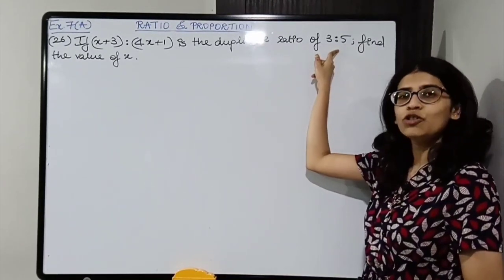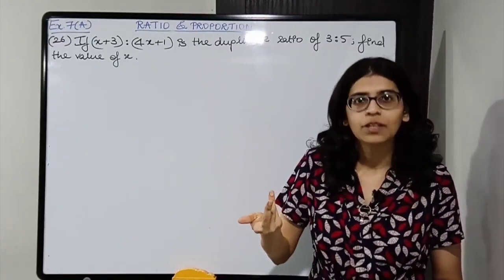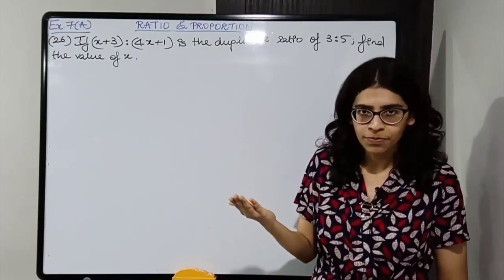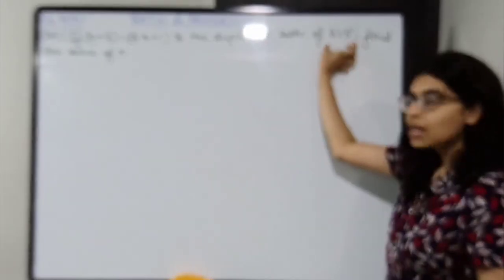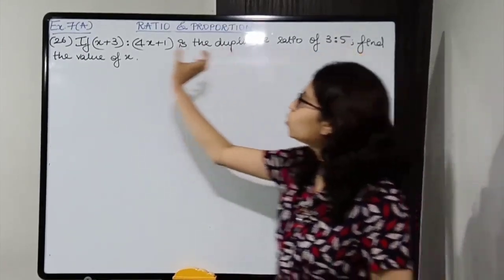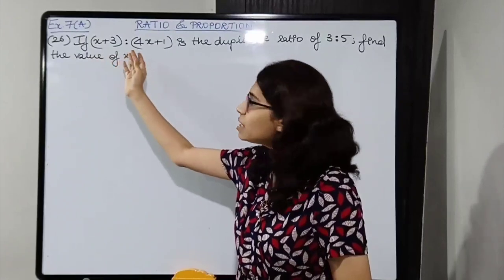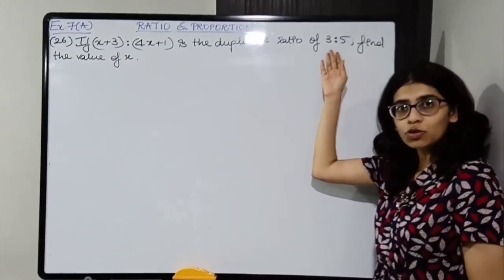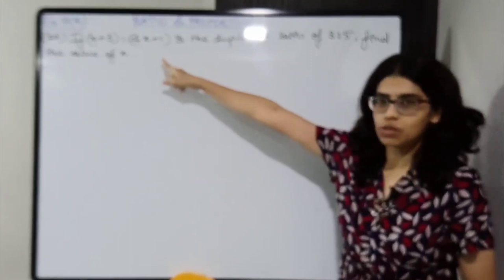What do you mean by duplicate ratio? You are going to square it — multiplying by the same ratio. So you have to square this, and the square of this ratio is equal to the other ratio because this is the duplicate of this. So you have to duplicate the ratio 3 is to 5, not the other one.